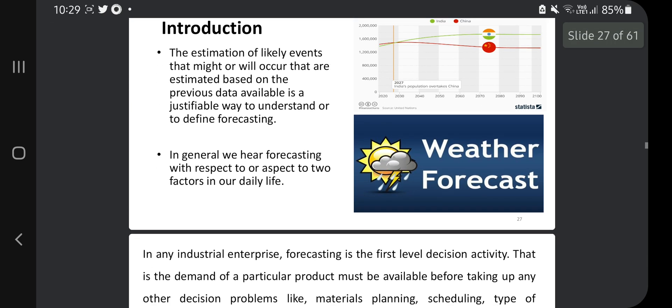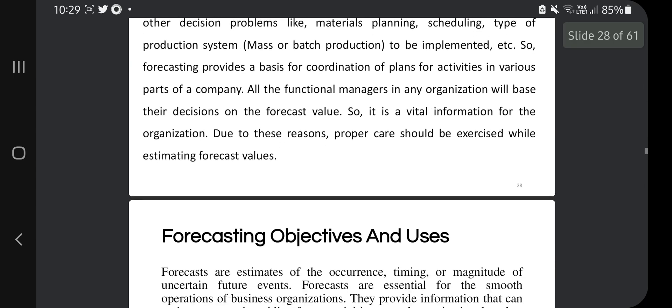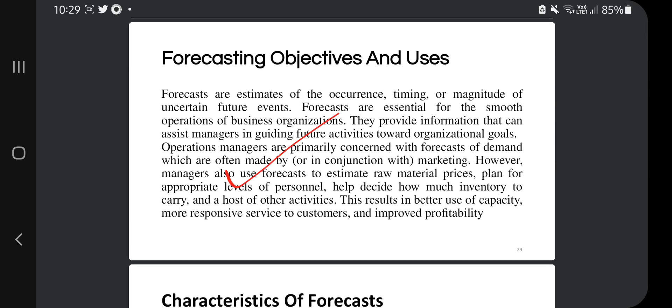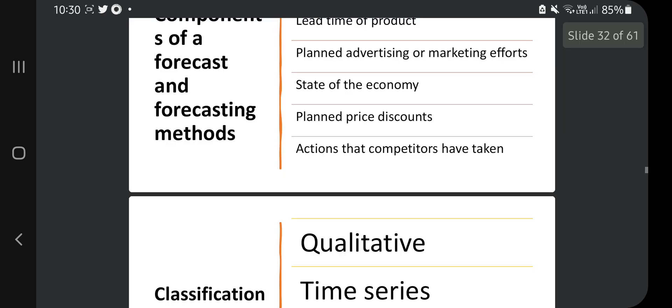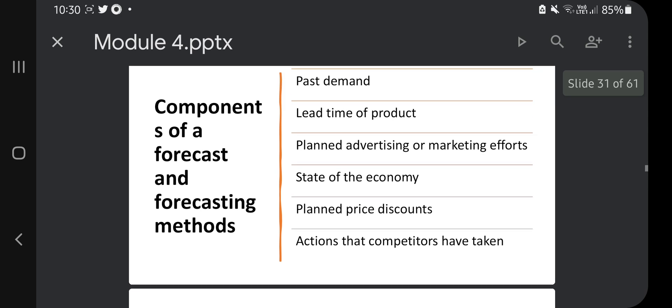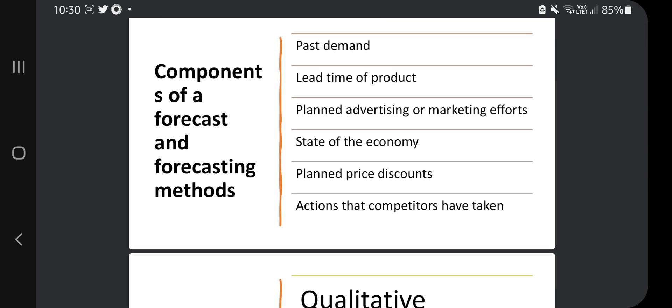So in page number 24, what you can find is the forecasting. So what is forecasting? Based on the previous trends, you are trying to make a guess regarding what could happen if the same circumstances are again occurring. What is the probability of this happening? That is called as forecasting - the estimation. So what is its objectives and uses, that you have to go through it. And the characteristics of forecasting - if they ask about forecasting, ask the definition, objective, use, and the characteristics and its applications as well. If the applications are not present here, google it, find it, and keep it in your mind.